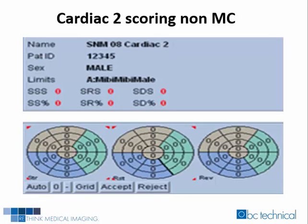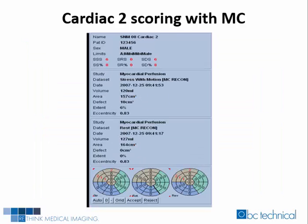Here are Cardiac II's non-motion-corrected study quantitative scoring results: the summed stress score equaled zero, the summed rest score equaled zero, and the summed difference score also equaled zero. For Cardiac II's motion-corrected study, the summed stress score was six, the summed rest score was zero, and the summed difference score was six.